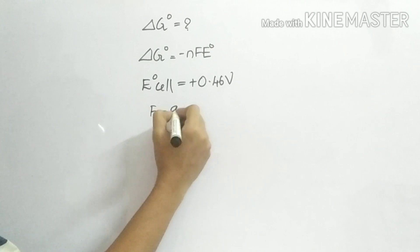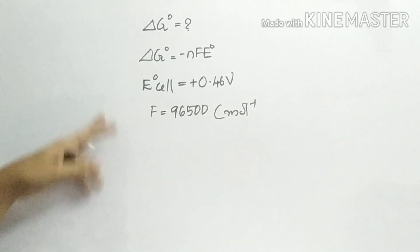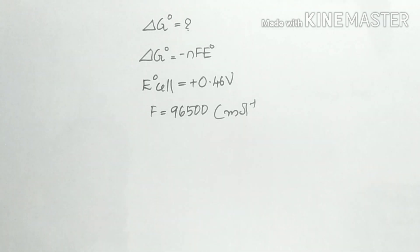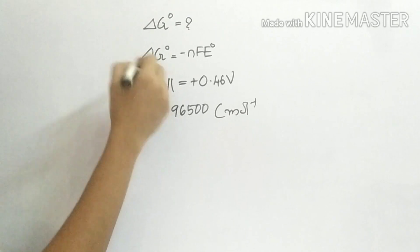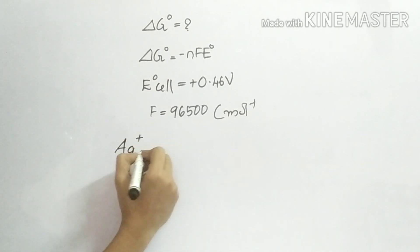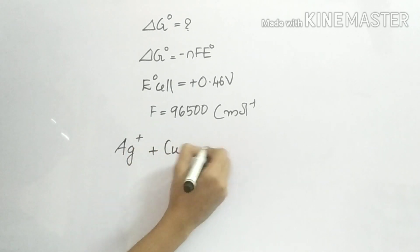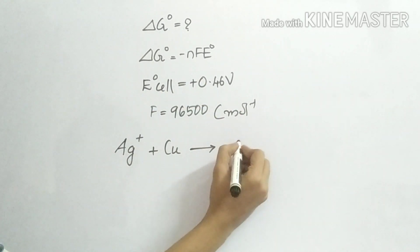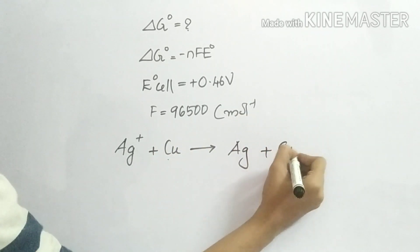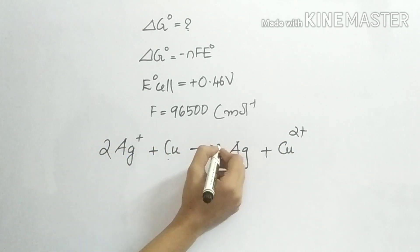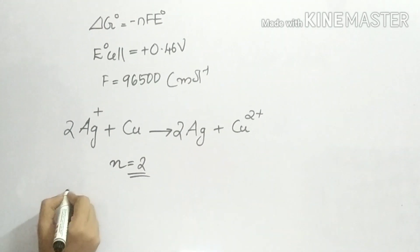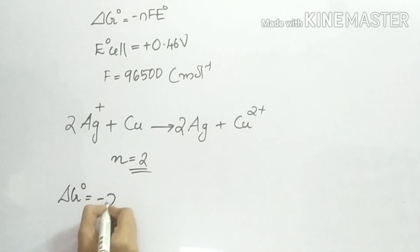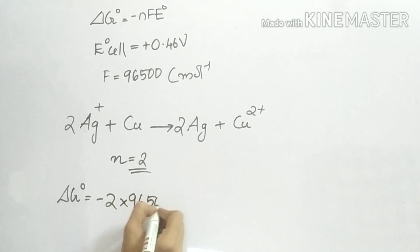The standard value is with E0 cell. The reduction of silver ions with copper: silver reduction, Ag is reduced and Cu is oxidized to Cu2+. The number of electrons is 2.